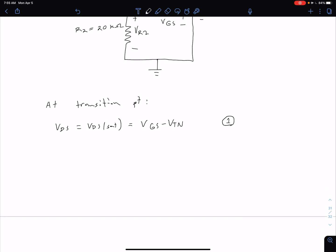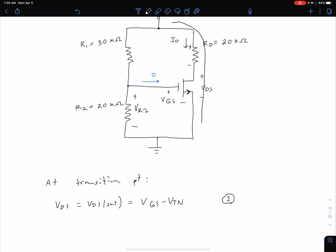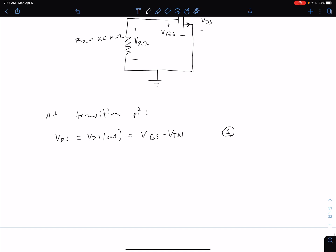We also know from KVL on the drain source loop, so from looking right here, doing this KVL, we've used this before but we have our VDS is equal to VDD minus ID times RD. And let's call this equation two.